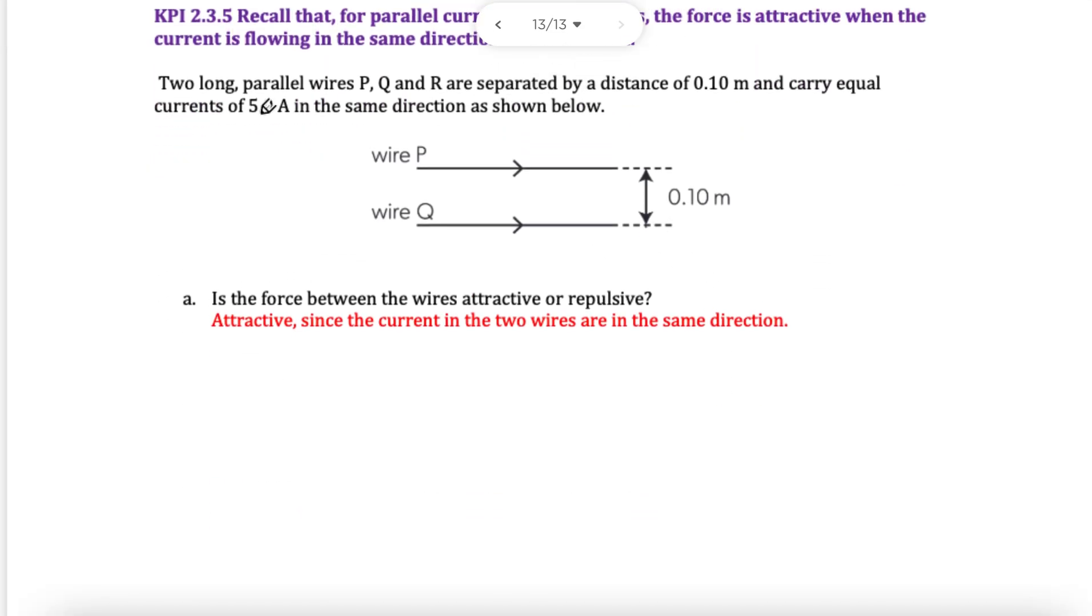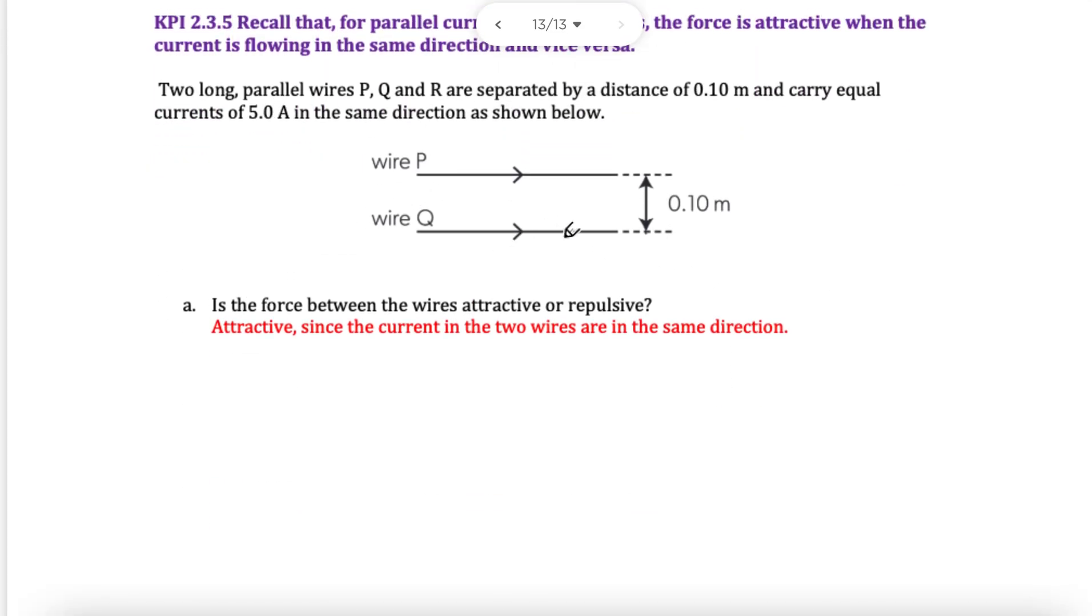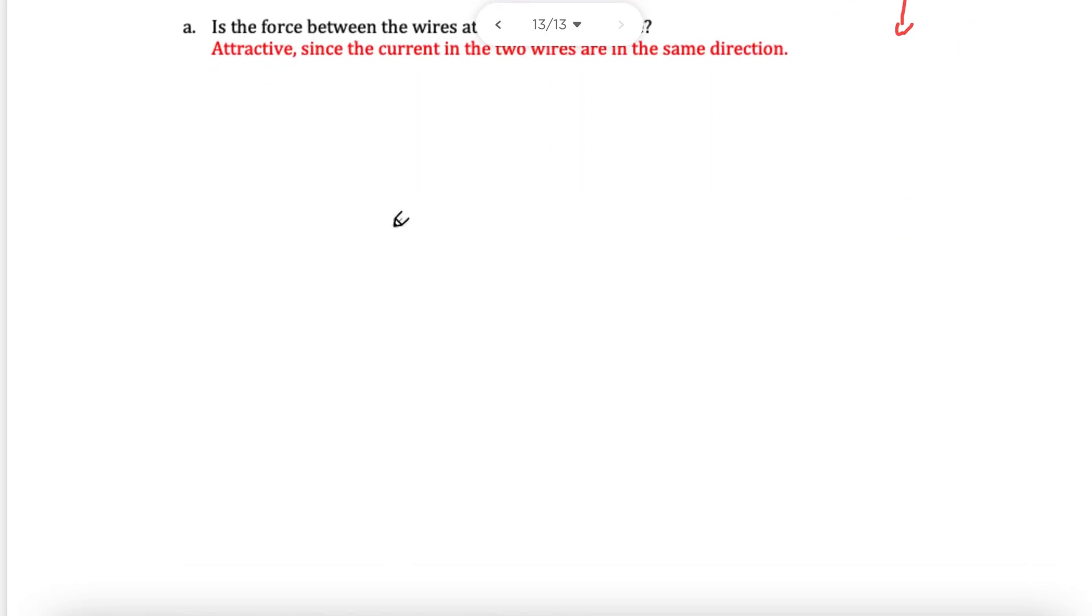Finally, two long parallel wires. There's a long, drawn-out way to figure out why they're attracting or repelling. I will not go through that with you in this video. You can watch my lesson video on it. But for now, attract or repel. Same direction, attract. Opposite direction, repel. Just remember that, and you're done. And I think that's it. We're done. Thank you.